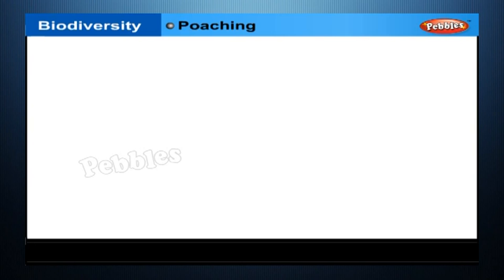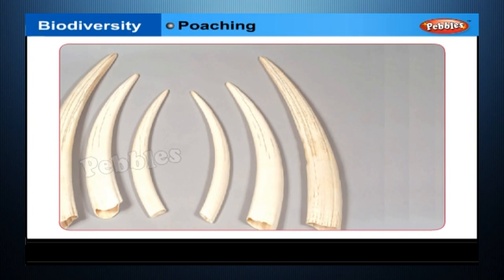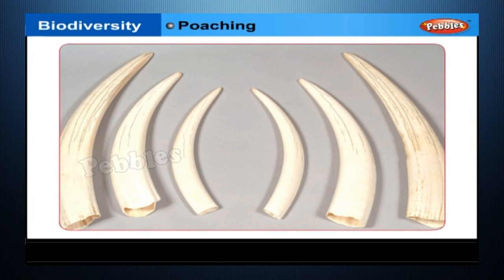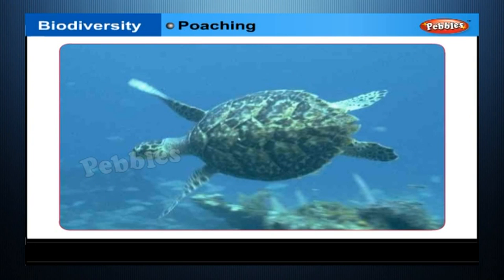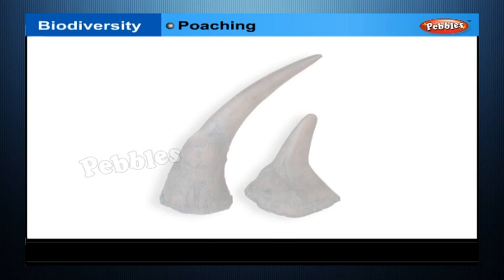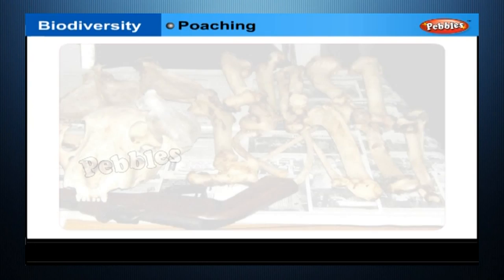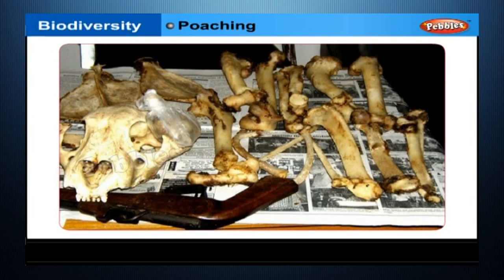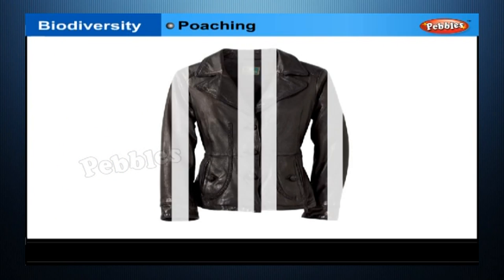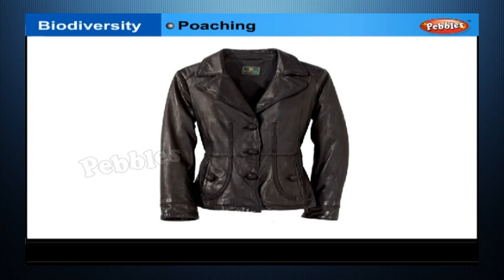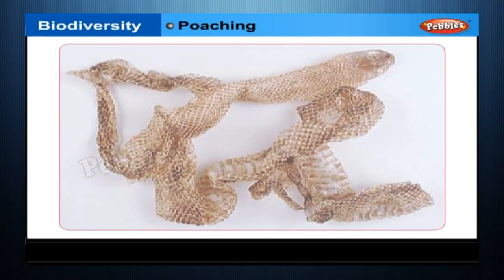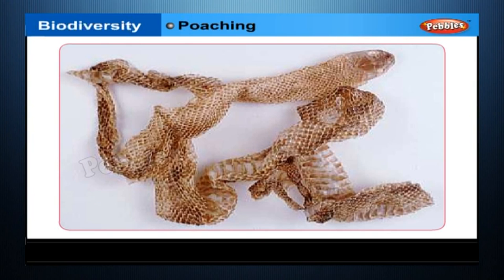Poached animals include those whose body parts are valued as ornaments — for example, elephants for ivory and turtles for shells. Body parts used in traditional medicine include rhinoceros horns and tiger bones. Animals killed for their hides include deer and cattle for leather, alligators and snakes for their skins, and wild cats, minks and bears for fur.